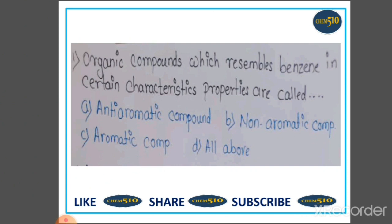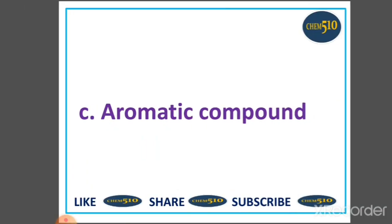First question: Organic compounds which resemble benzene in certain characteristic properties are called ____. Option A: anti-aromatic compound, B: non-aromatic compound, C: aromatic compound, and D: all of the above. We know that benzene-like structures are aromatic compounds, so option C is correct: aromatic compound.